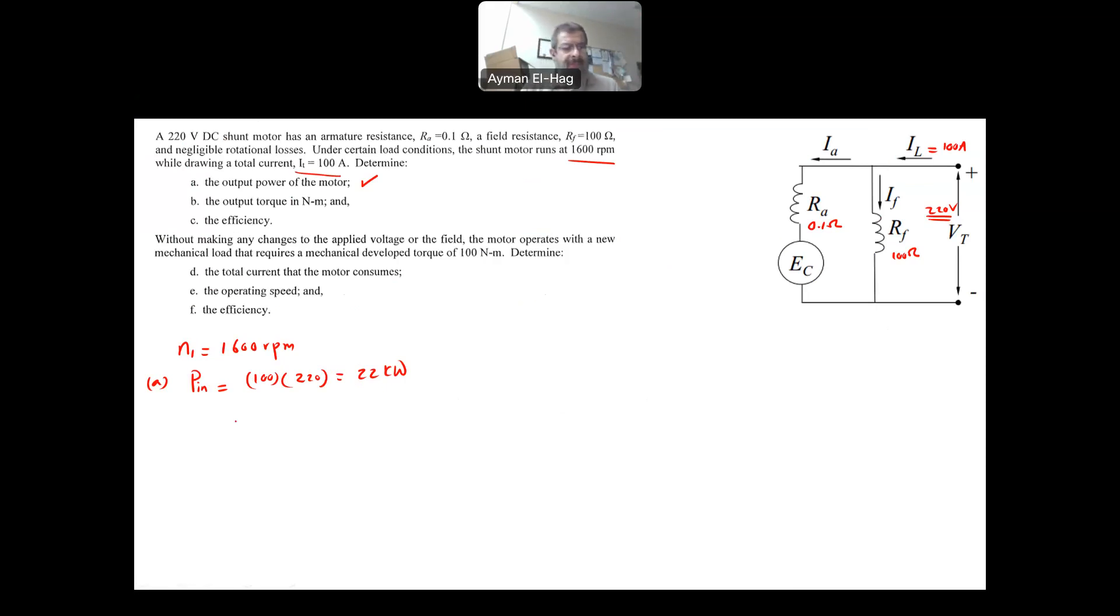We have here two losses. So the losses, P loss, is equal to IF square times RF, plus IA square times RA. Okay, this is to find your output power. But we don't know IF, we don't know IA. We only know I total or I line.